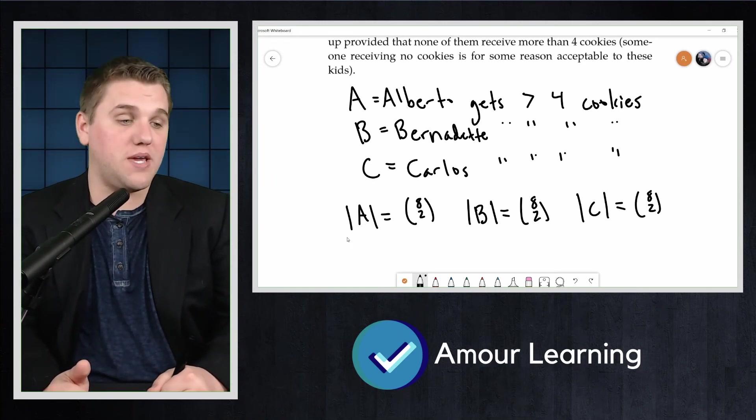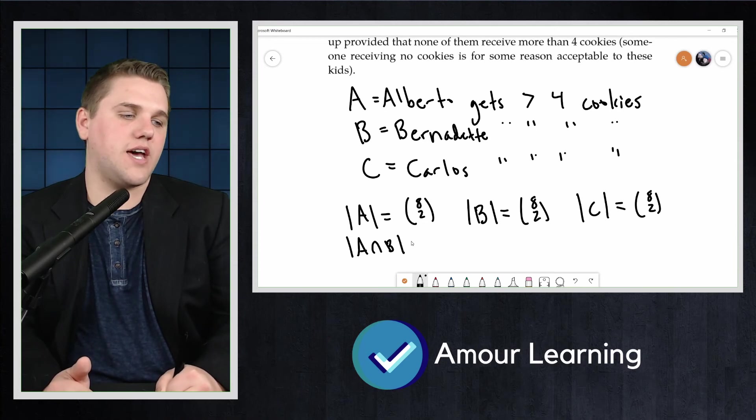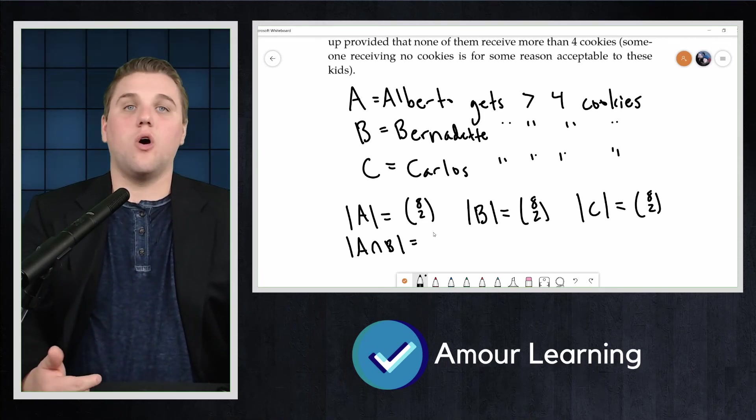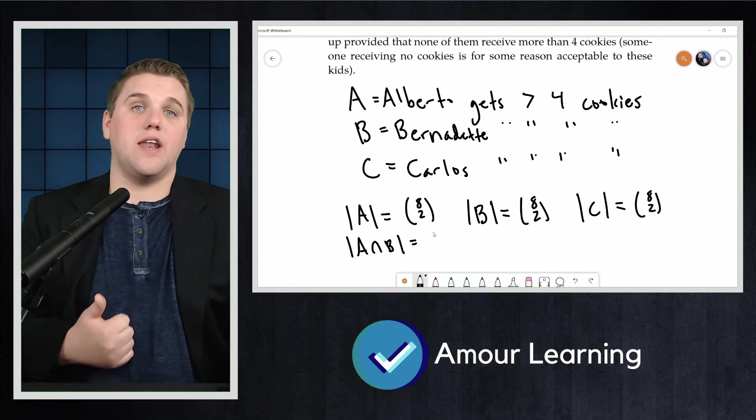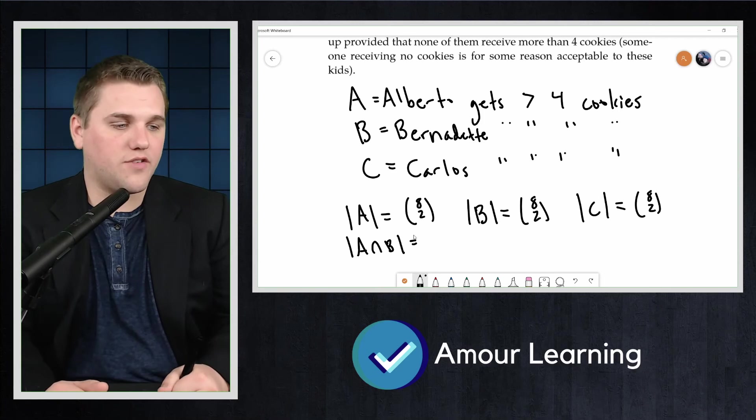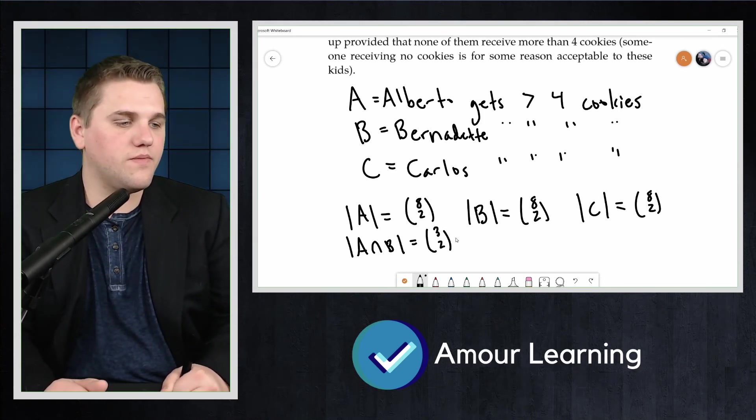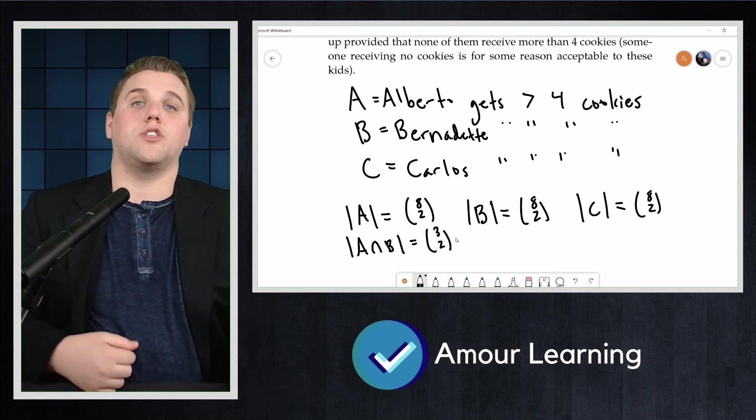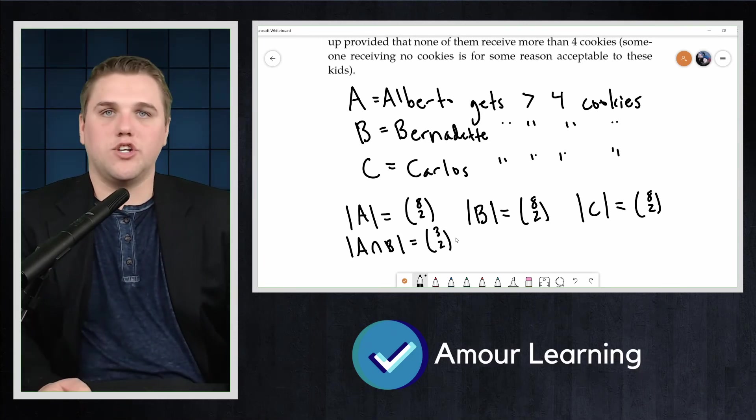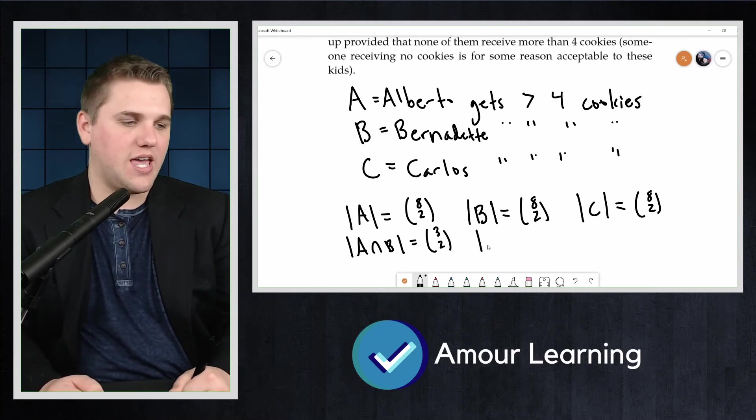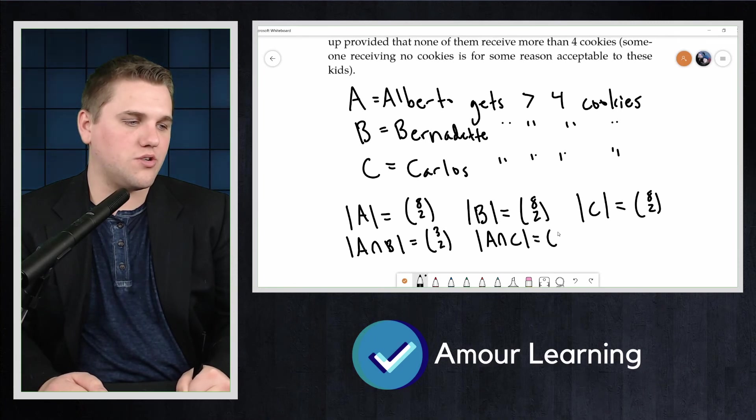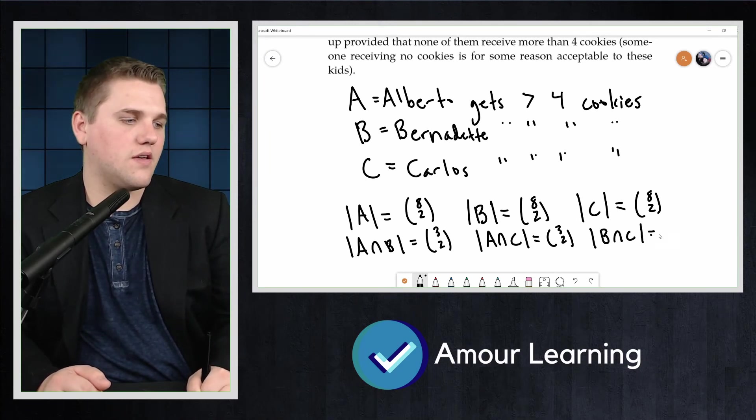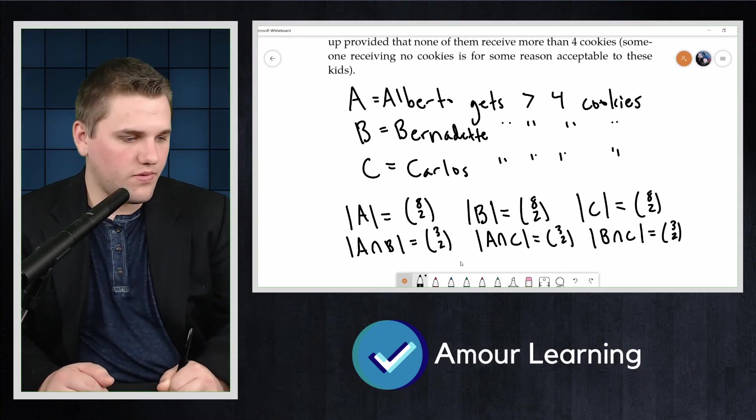Okay, so what about A intersection B? What's the size of this? Well, this is the case where Alberto gets more than four cookies and Bernadette gets more than four cookies. So give Alberto and Bernadette five cookies each. And so that gives the leftovers using stars and bars. We have 3 choose 2 for that. So again, give Alberto and Bernadette five cookies each, leaving one star to distribute to the three kids, two bars, and then that gives you 3 choose 2. Similarly, A intersection C is 3 choose 2, and B intersection C is 3 choose 2.